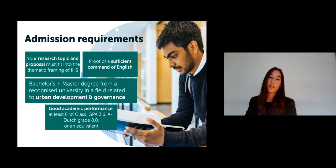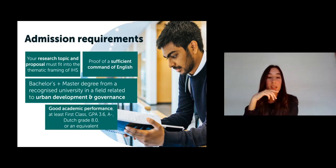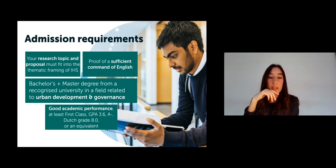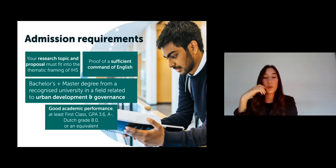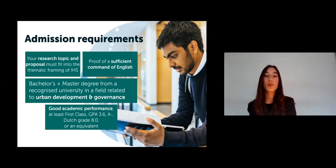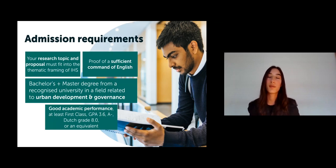Before you submit your application, it's good to check whether you meet the admission requirements. You need to hold a bachelor's and a relevant master's degree from a recognized university. If you are unsure, you can email admissions at IHS. For academic performance, you need at least first class — that means GPA 3.6 — which you can find in your transcripts. Your research proposal also needs to fit within the IHS knowledge areas, which you can find on the website.